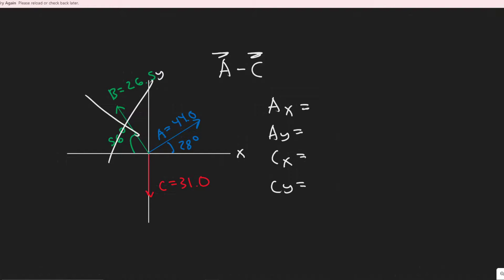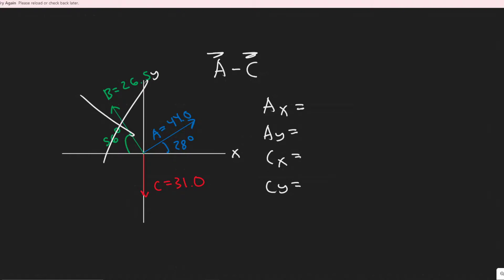So essentially, what we need to find is Ax, Ay, and sorry about that notification. We have Cx and then Cy. Essentially, the way it works is when you're subtracting or adding vectors, you can't just leave them, I can't just do 44 minus 31. I have to split them into their x and y first, and then you subtract those components, and then you basically just combine it back to get your answer.